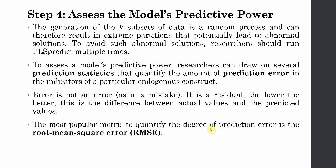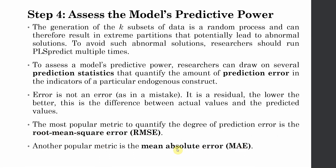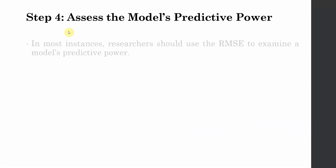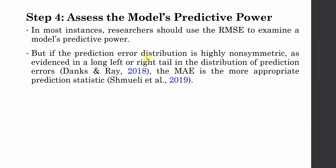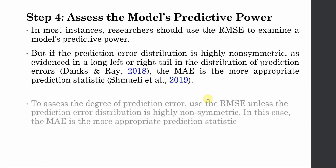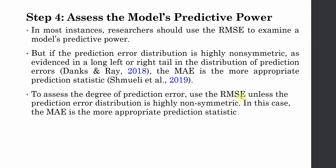The most popular metric to quantify the degree of prediction error is Root Mean Square Error (RMSE). Another metric is MAE, Mean Absolute Error. In most instances a researcher should use RMSE, but if your prediction error distribution is highly non-symmetric — that is, there is a long left or right tail in the distribution of prediction error for the endogenous variables — then you should use MAE. SmartPLS will provide you the graphs for this.